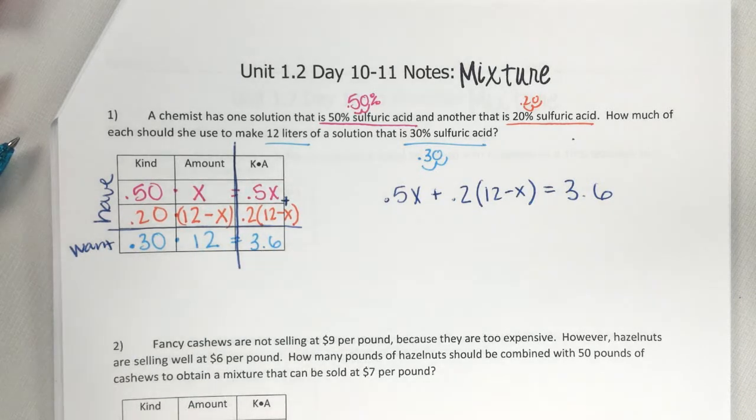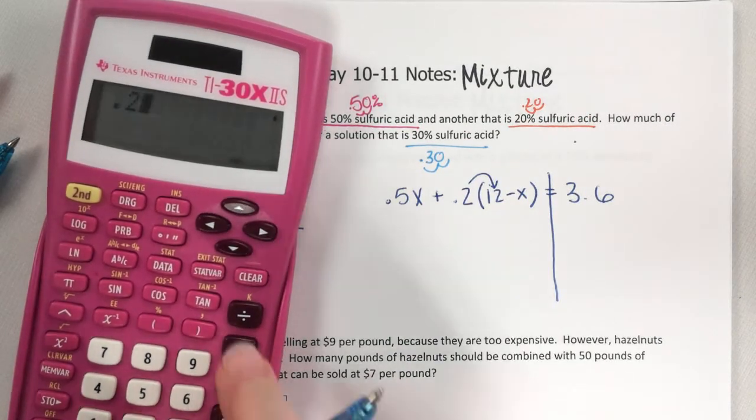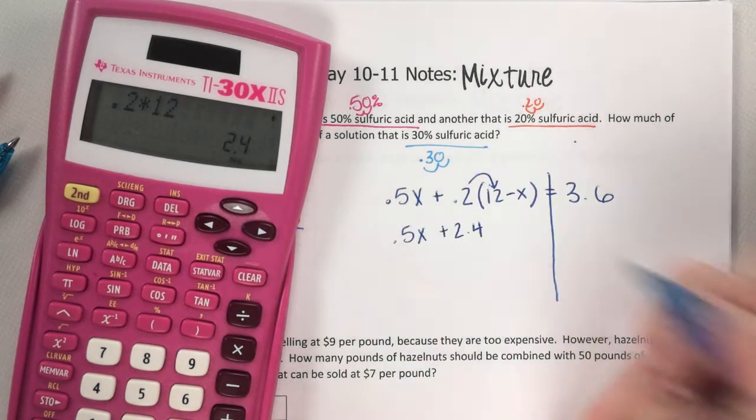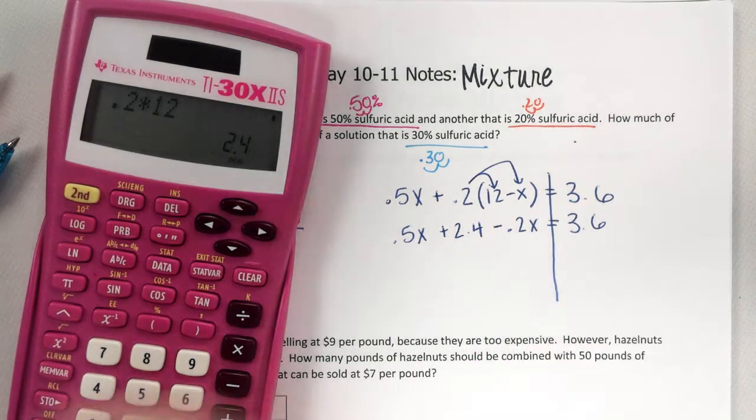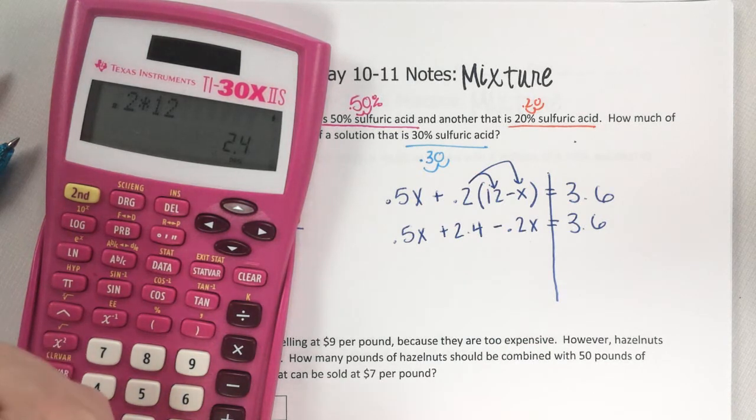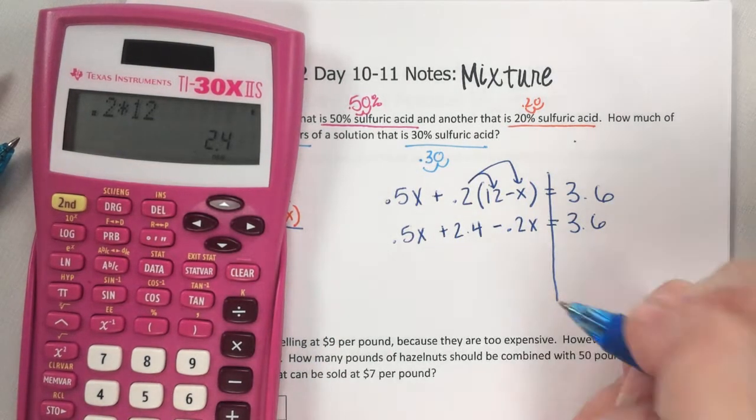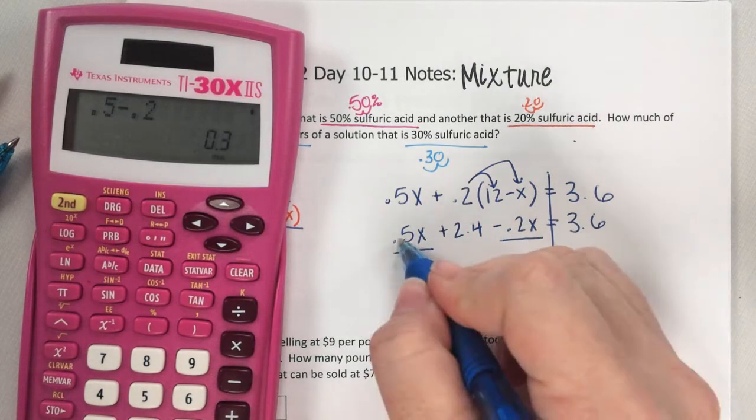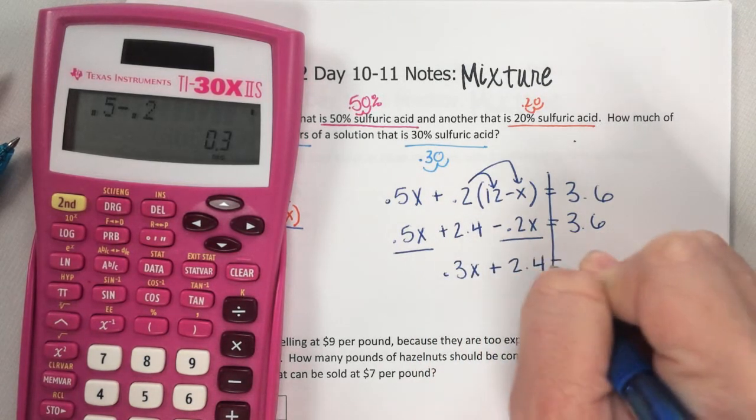It's always going to work that way. You're always adding these two to get that. Does that make sense? So then we solve. It's like we have everything before this. So what am I going to do first? Yeah, I'm going to distribute. I'm going to multiply. So 0.2 times 12 is going to be 2.4. I'm going to bring down that 0.5X so I don't forget about it. And then 0.2 times negative X is negative 0.2X. So 0.5 minus 0.2 is 0.3 because they're on the same side. I use the exact symbols they have. I'm not doing opposites. So 0.3X plus 2.4 equals 3.6.